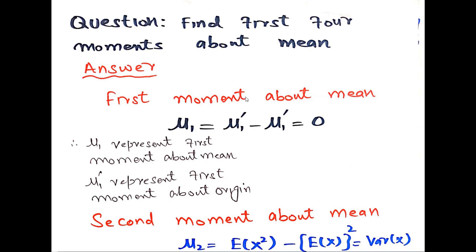The first moment about the mean, represented by μ₁, is equal to the difference of the first moment about the origin μ₁′ minus μ₁′, which equals 0. So the first moment about the mean is always equal to 0. Here μ₁ represents the moment about the mean and μ₁′ represents the first moment about the origin.